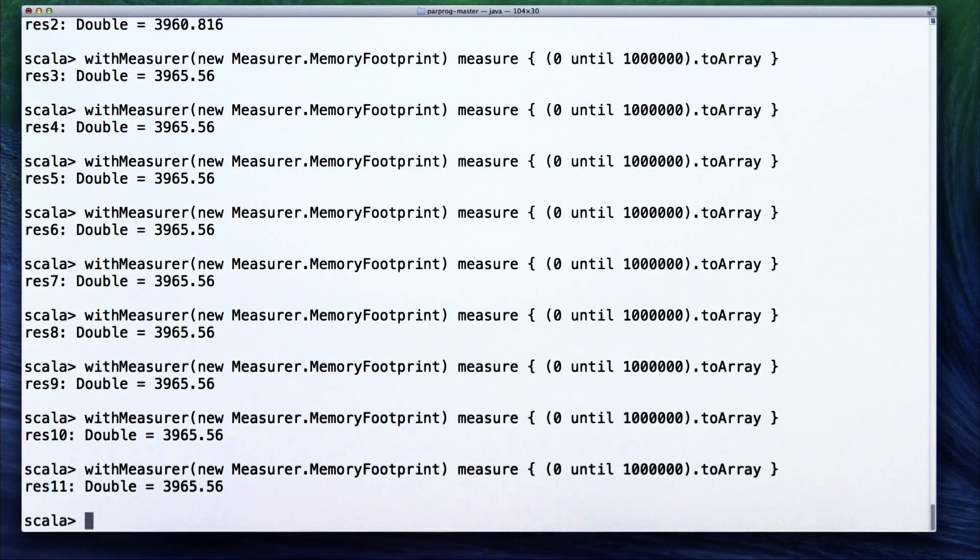Since integers are 32-bit, that is, they occupy 4 bytes of memory, and we have a million integers, that means that we have 4 megabytes of memory, which is exactly what Scalameter measured here.